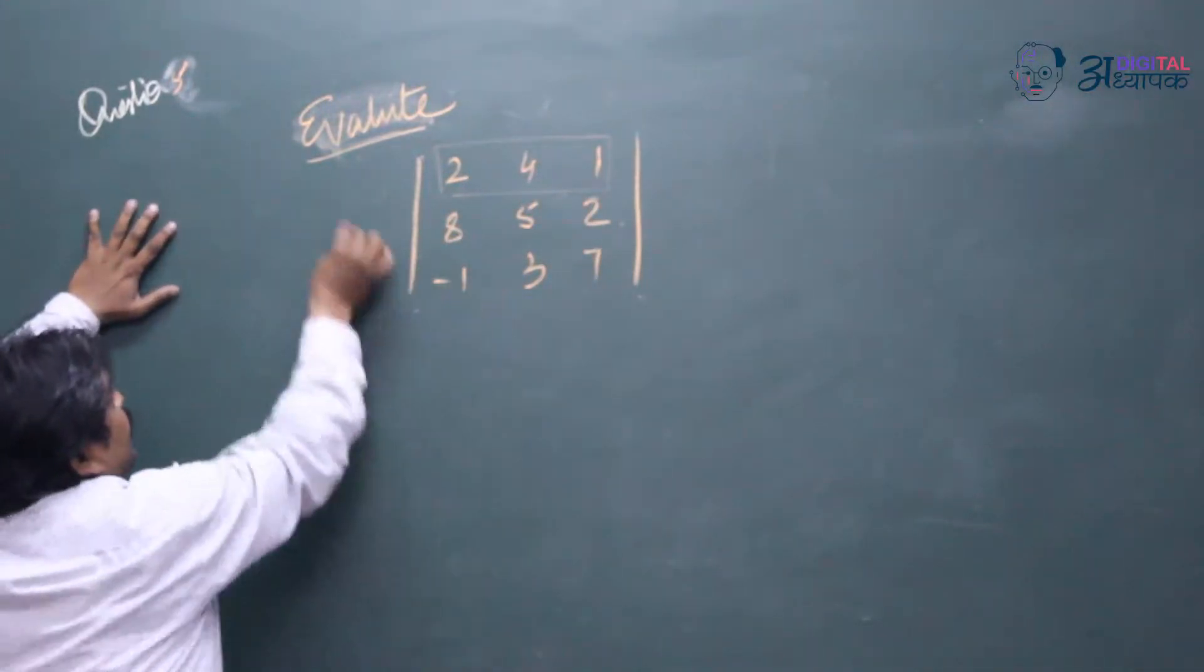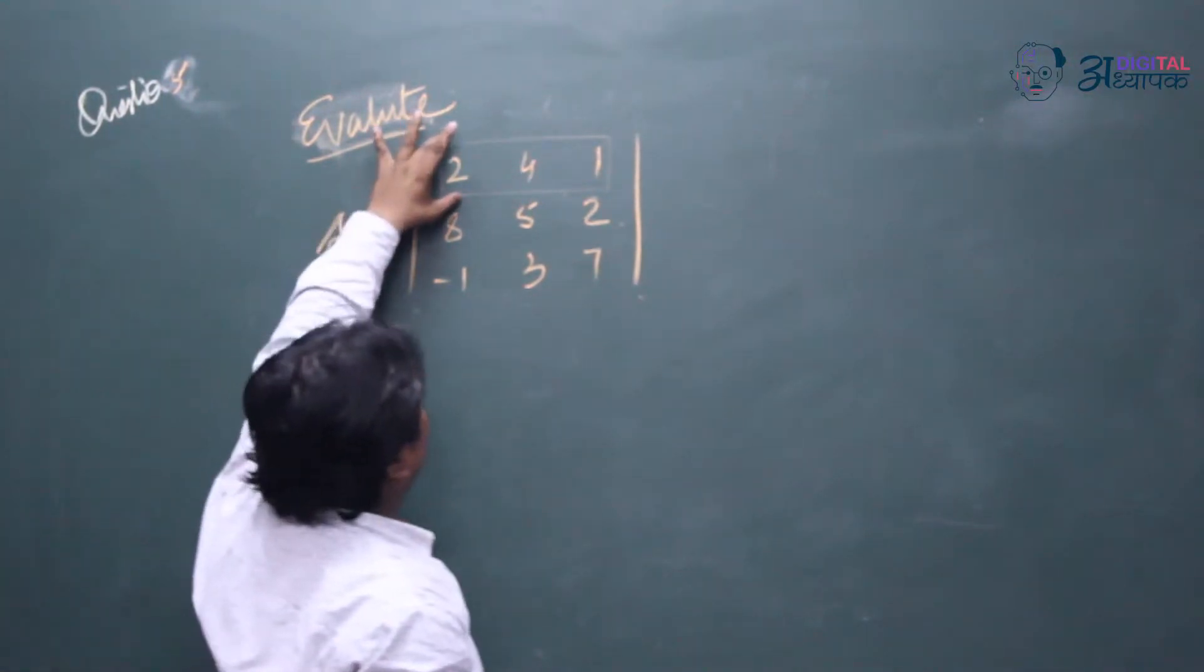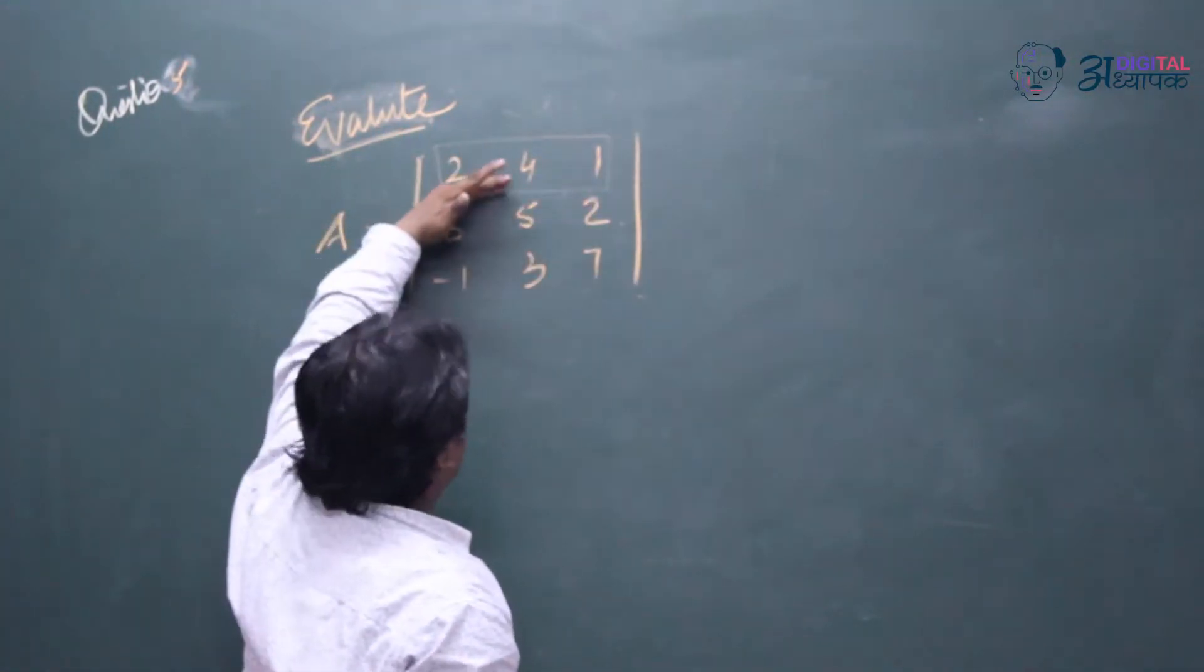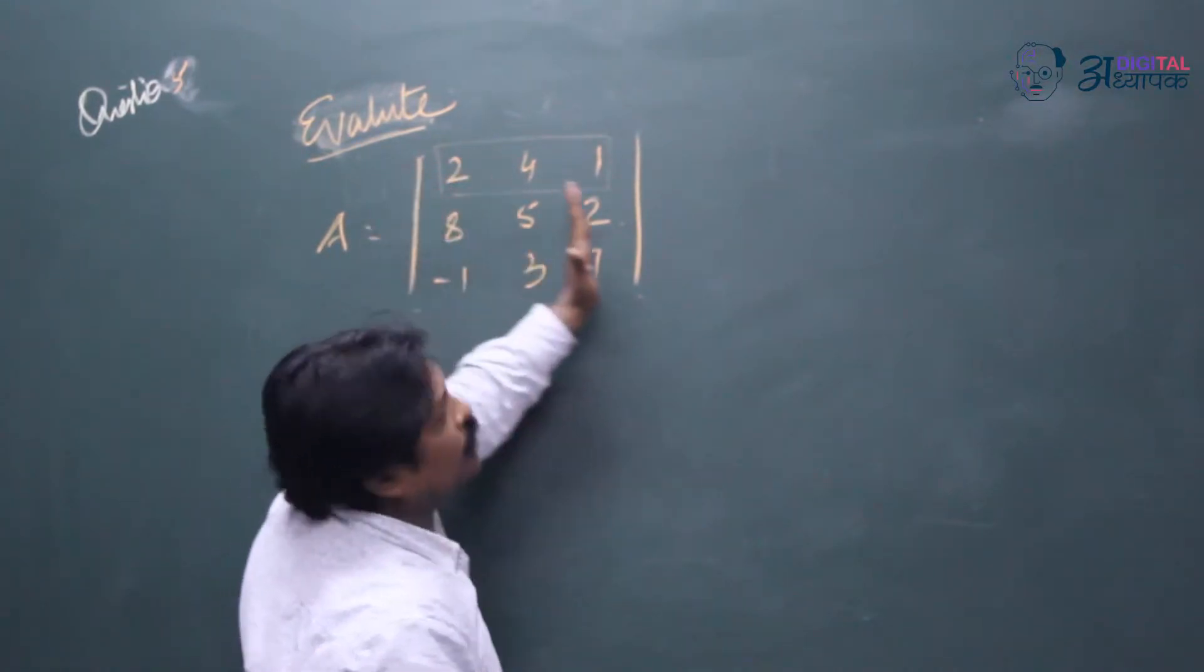We have to expand this row, either this row, either this, either this or this row.